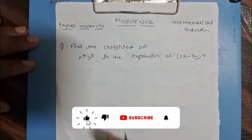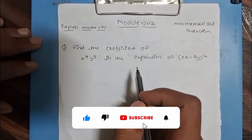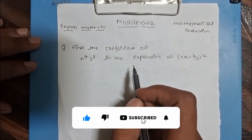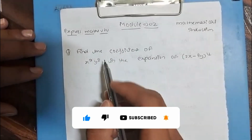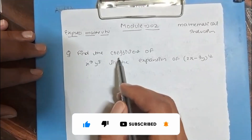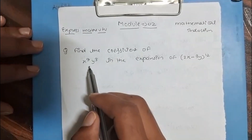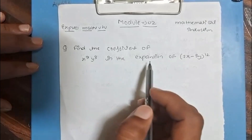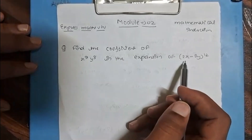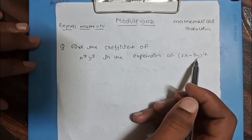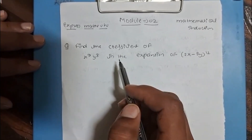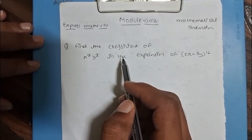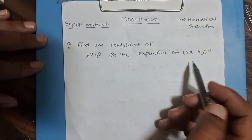Hello everyone. Today we are going to solve a most important question which may be asked in the video examination from module 2. The question is: find the coefficient of x to the power 9, y to the power 3, in the expansion of (2x minus 3y) whole power 12.